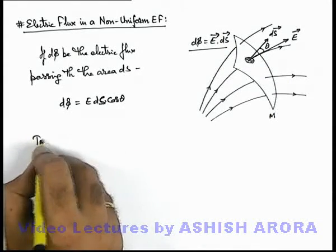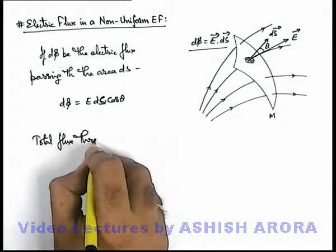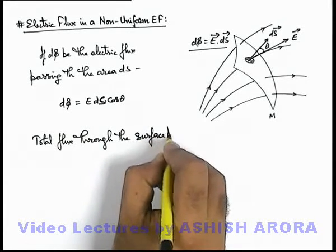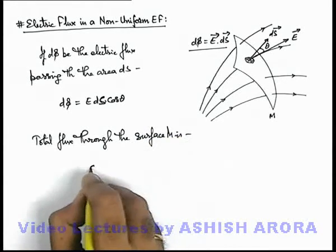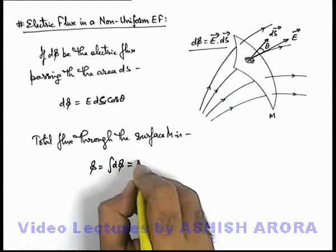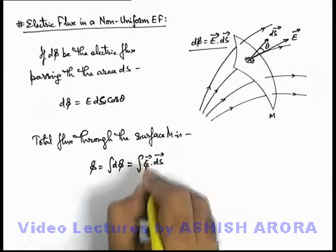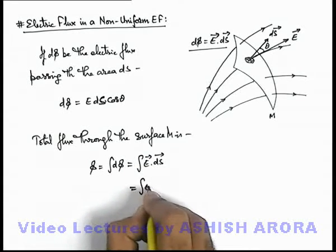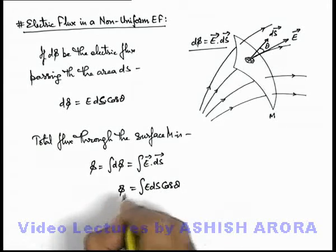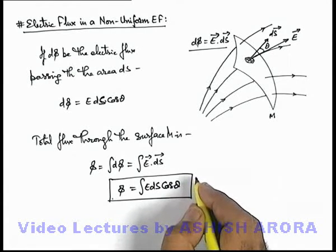We can say the total flux through the surface M is given as phi, which is the integration of d-phi. Here we can write it as the integration of E dot dS, or the same can be written as the integration of E dS cos(theta). This is the way how we calculate the electric flux through a given surface in a non-uniform electric field.